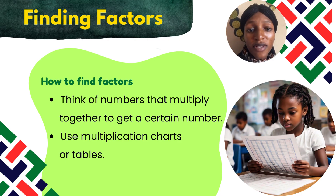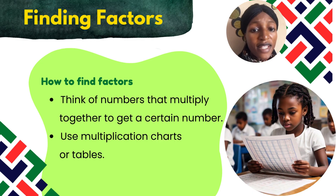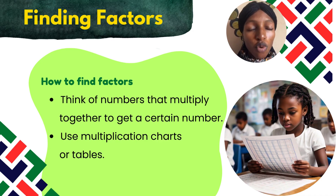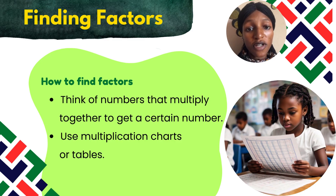Finding factors is not difficult at all. So how do you find factors? Think of numbers that multiply together to get a starting number — like numbers you can multiply together. If you are given 4, which numbers can you multiply together? Just think of 2 times 2. And to find these numbers quickly, you can make use of multiplication charts or multiplication tables.